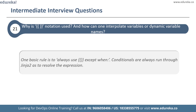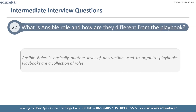The next question is: why is the double curly brace notation used and how can one interpolate variables or dynamic variable names? The basic rule is you use double curly braces to define an expression. Conditionals are always run through Jinja2 to resolve the expression, except for the when clause, where we must use brackets — otherwise differentiating between an undefined variable and a string would be difficult.